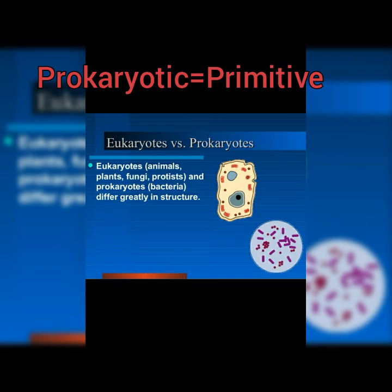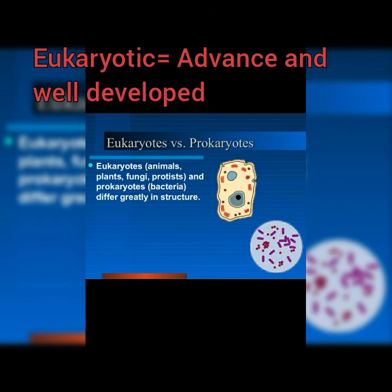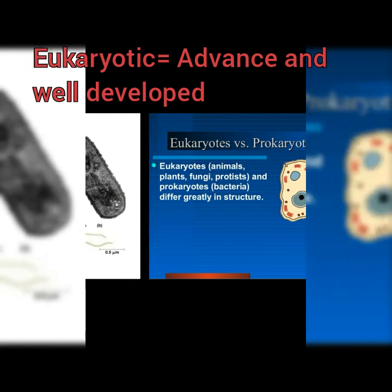Eukaryotic cells are found in animals, plants, fungi, and protists, while prokaryotic cells are especially found in bacteria. Bacteria are simply unicellular and can differ greatly in structure.